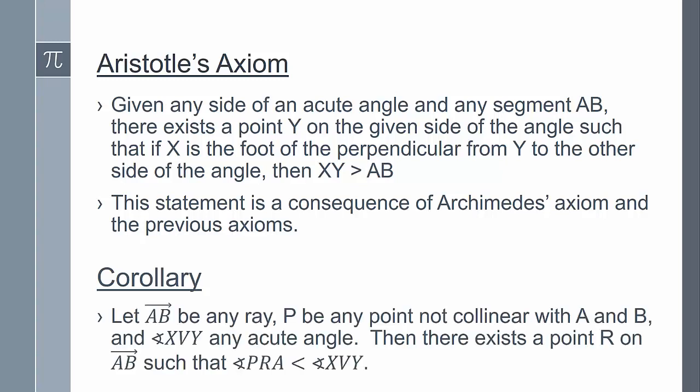The useful corollary of Aristotle's axiom is let AB be any ray, P be any point not collinear with A and B, and angle XVY any acute angle. Then there exists a point R on ray AB such that angle PRA is less than angle XVY. So if we start with any point R on ray AB, then as R recedes endlessly from the vertex A of the ray, then angle PRA decreases to zero because it's eventually smaller than any previously given angle XVY.